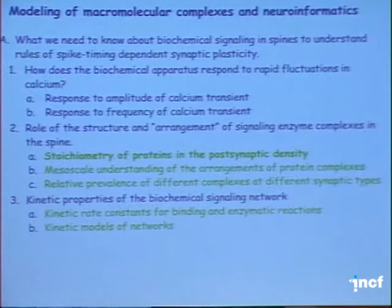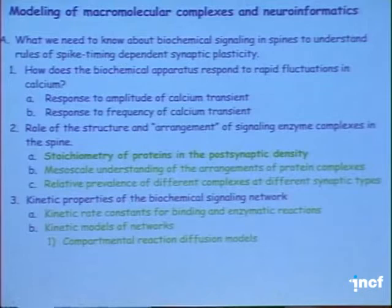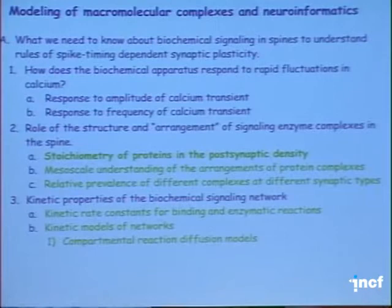There are two major ways of building a kinetic model. One commonly used approach is a compartmental reaction-diffusion model, which means building differential equations and placing the modeled reactions within small compartments in the cell. For a compartment as small as the spine, what we've found is that spatially accurate stochastic models are a much better — more accurate — representation of the kinetics of biochemical reactions in the spine.